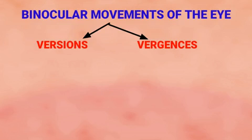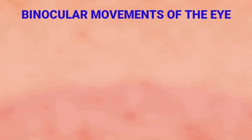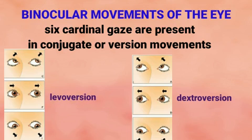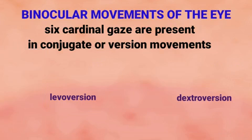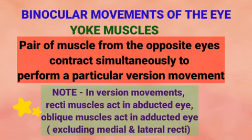Binocular movements are of two types: versions and vergences. Versions are conjugate movements — synchronous, symmetric movements of both eyes in the same direction. There are six cardinal positions of gaze: dextroversion, levoversion, dextroelevation, levoelevation, dextrodepression, and levodepression. Each version movement is carried out by a pair of muscles, one from each eye contracting simultaneously — these are called yoke muscles. In version movements, recti muscles act in the abducted position and oblique muscles act in the adducted position.